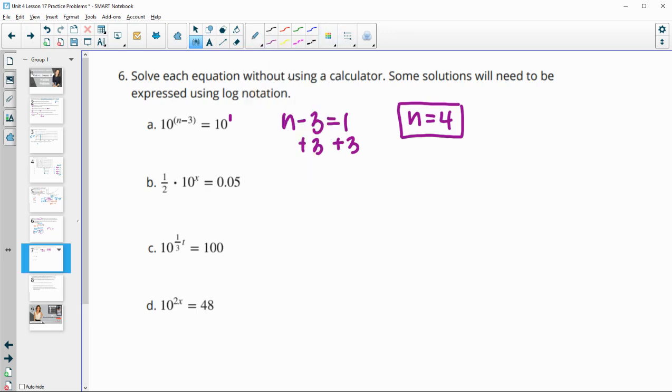For part B, we can isolate this 10 to the x by multiplying both sides by 2 to get rid of that 1 half. So 2 times 1 half is 1. So then we end up with 10 to the x and 0.05 times 2 is 0.1. 0.1 is 1 tenth. So if we write it as a fraction, 1 tenth. And then 1 tenth as a power of 10 is 10 to the negative 1. So then we know that x equals negative 1.